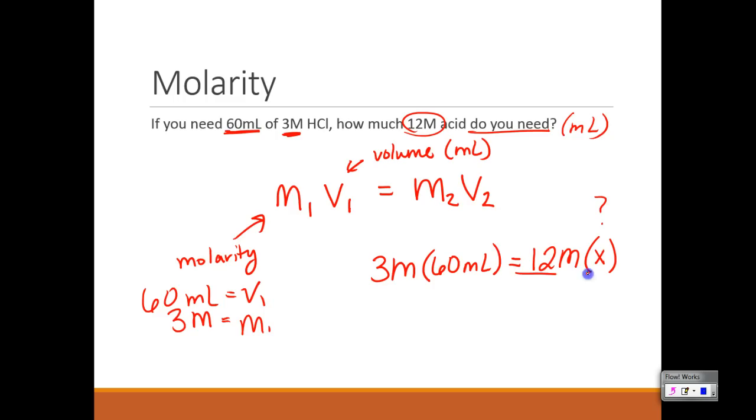Correct. So now you just use your basic math. And so we're just going to divide by 12 molar on both sides. Obviously, these cancel. And now we do the calculation. So 60 times 3 divided by 12 equals 15 milliliters.